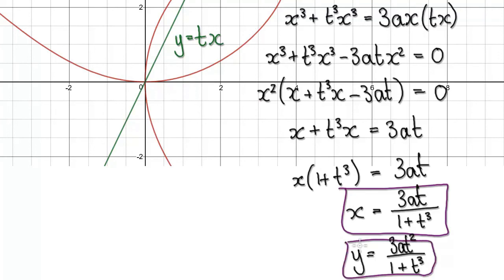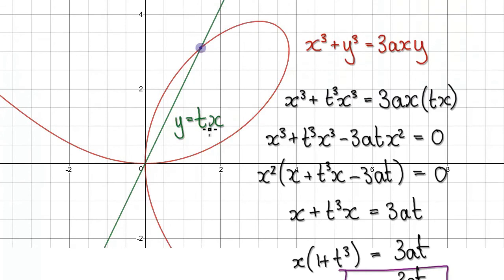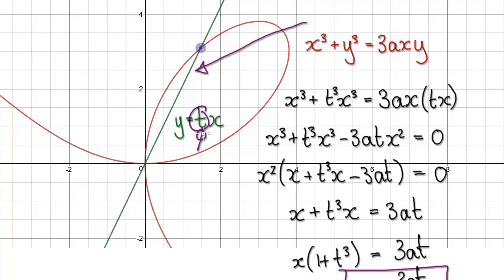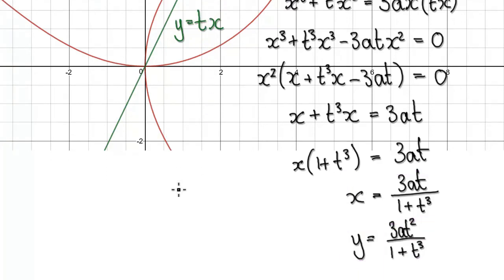These are our parametric equations. Looking back at this: remember T represents a gradient, so when we use a straight line, we cannot have T equal to 0, because that wouldn't be a straight line. So T cannot be 0 if we are using a straight line to simulate our scenario.